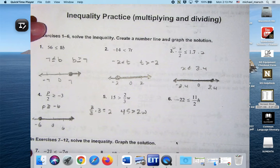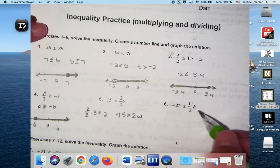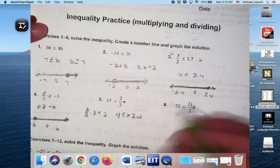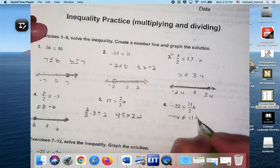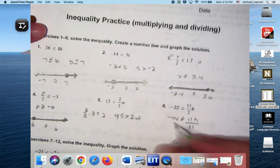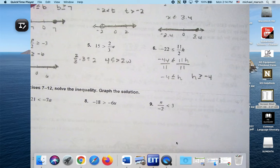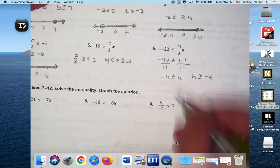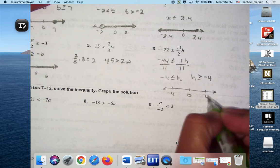We did number 5 together. And then this one's a little bit different. You could have multiplied everything by 2 to clear the fraction. And then you'd have negative 44 less than or equal to 11H. And then you still have to divide by 11. So you would get negative 4 is less than or equal to H. H is greater than or equal to negative 4. You guys with me on that one? So then when I graph it, negative 4, 0, 4.